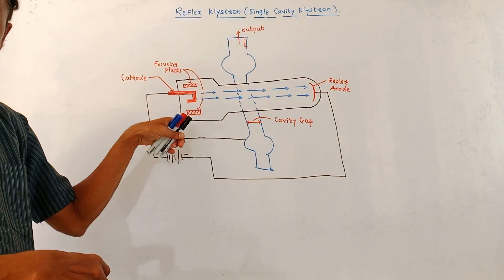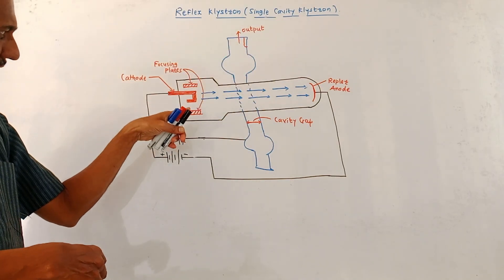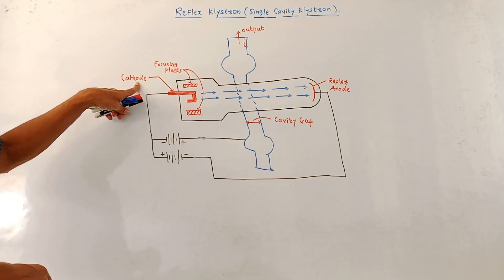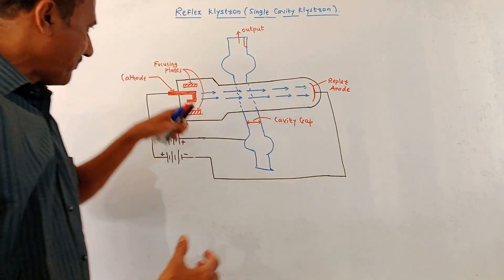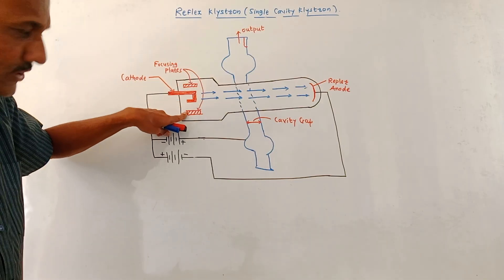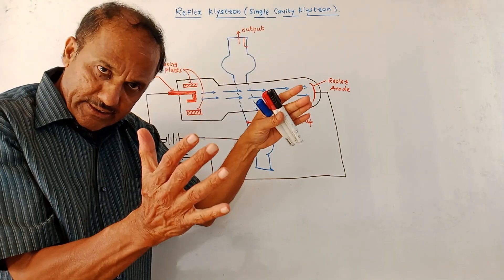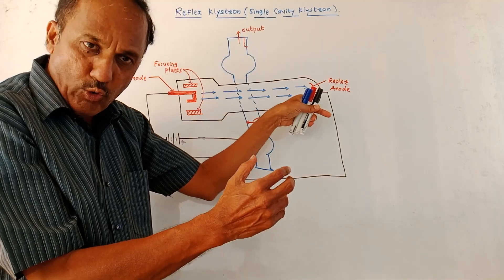The construction details are shown in this diagram. It consists of a cathode terminal which is producing electron beam. Now the focusing electrodes are used to focus the electron beam towards the output side.